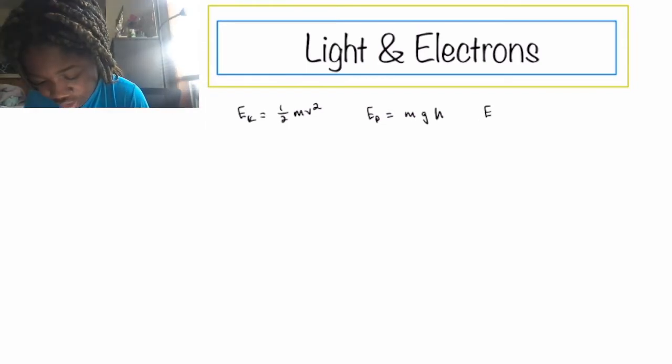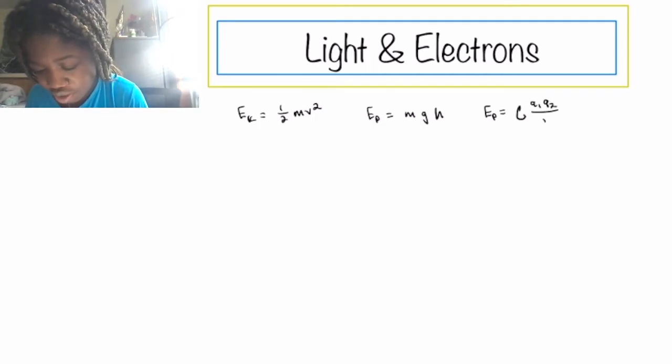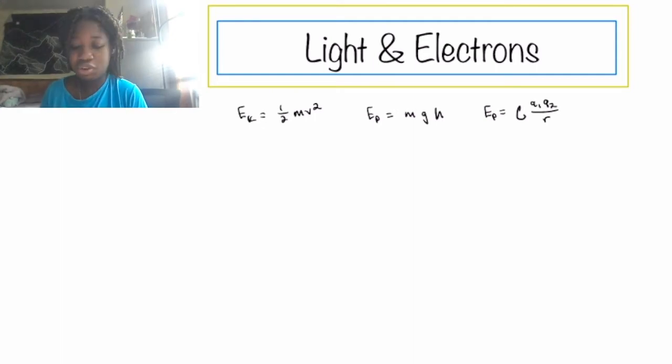Ek equals kq1q2 divided by R. We have our total energy, which equals Ek plus Ep.